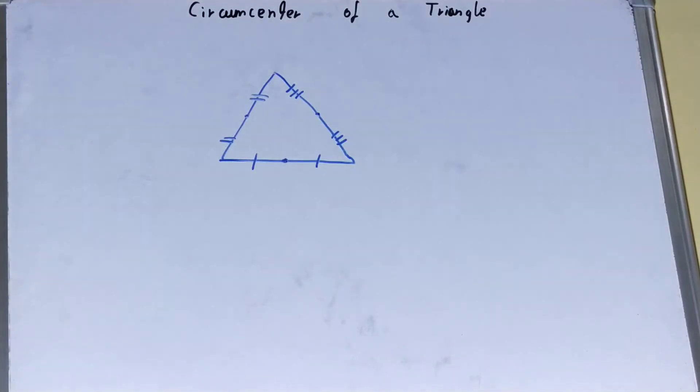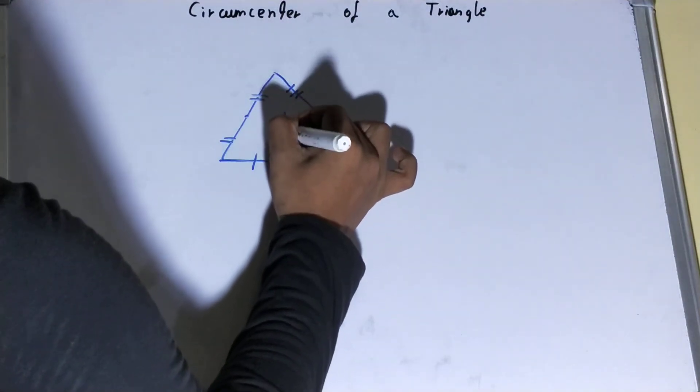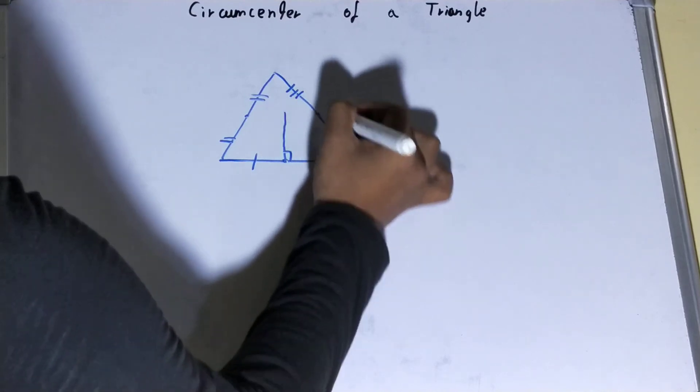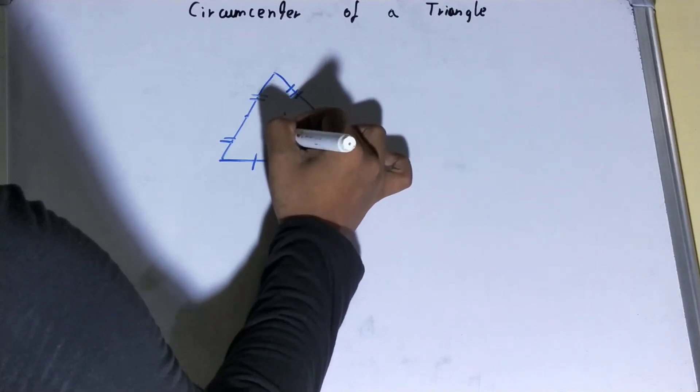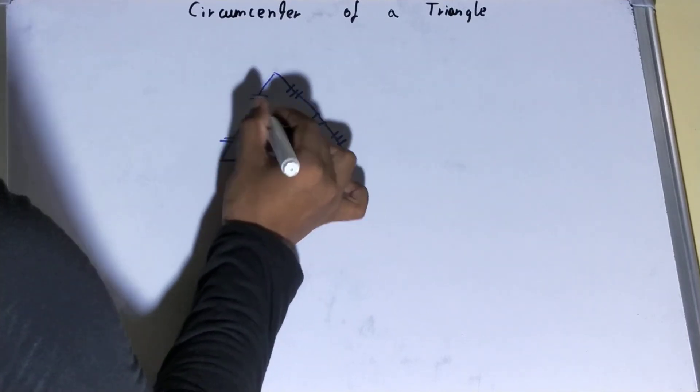Once you are done with the midpoints of each of the sides, what you need to do is draw a 90 degree perpendicular from each of the midpoints. Like from here 90 degree perpendicular, from here also 90 degree perpendicular, and from here also a 90 degree perpendicular.